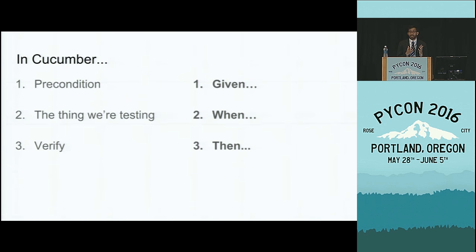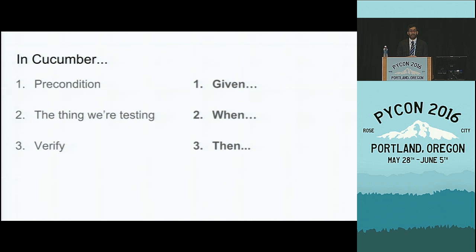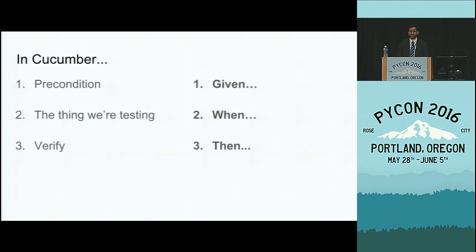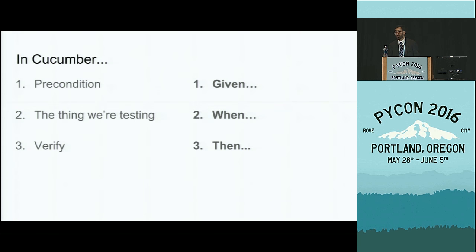The thing that I'm testing is expressed using 'when' clauses — so, when I split my string, or when I try to view my account information. And my verification is denoted by 'then' statements — so, then I expect there to be two tokens, 'hello' and 'world', or then I expect to see my account number or my order history.